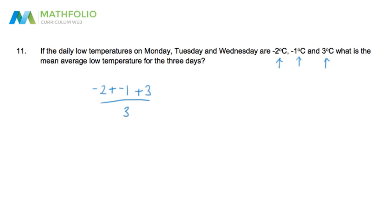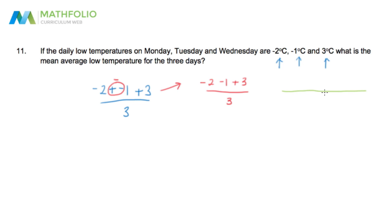One thing to focus on is that when we are adding a negative, we are really subtracting. So the numerator of this fraction is really negative two minus one plus three, divided by three. A tool that always helps with addition and subtraction of negatives is the number line. Our starting number is negative two, and we are subtracting one, so that means we're making one jump to the left.